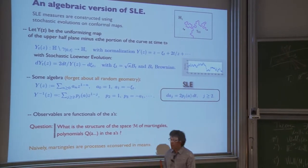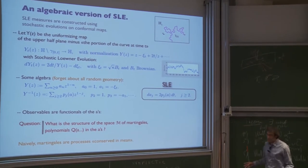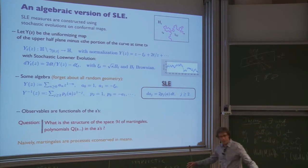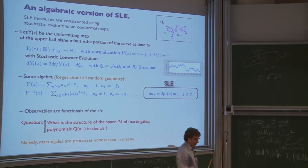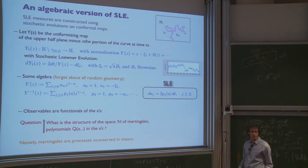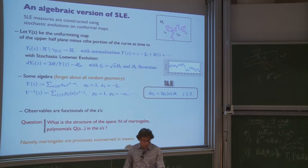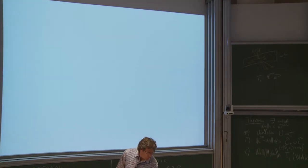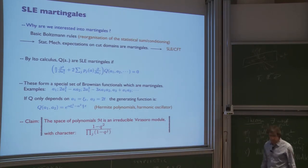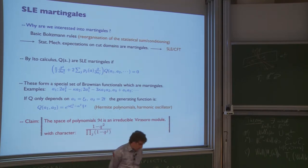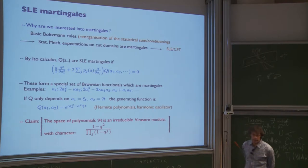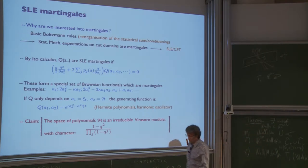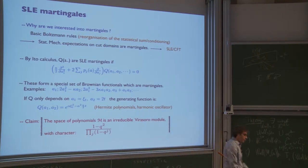When you have a process, a martingale is something which is conserved in mean. In integrable systems you have many conservation laws; here you only ask for conservation laws in mean. So we want to know the structure of the space of martingales, which are probabilistic objects. From Boltzmann's basic rule of statistical mechanics, we know that correlation functions of a statistical mechanics model — all observables in statistical mechanics — are going to be martingales. So if we know the space of martingales for our process, we will know more or less all the correlation functions linked to the statistical model and to the properties of the curve.